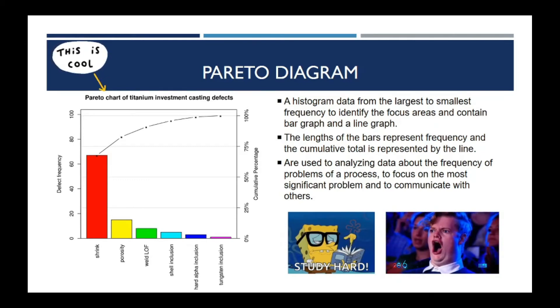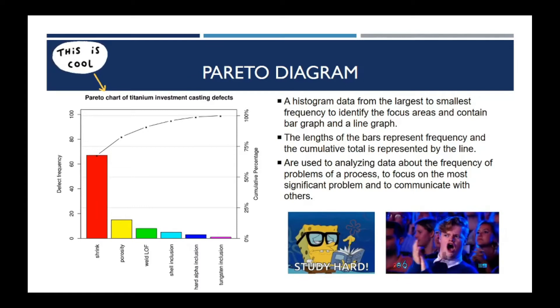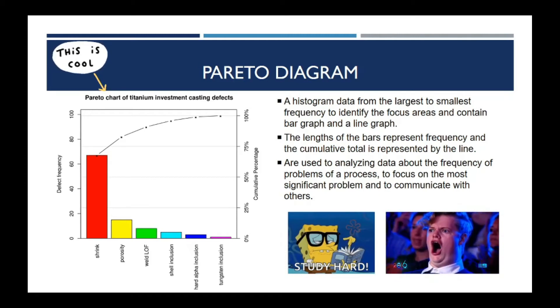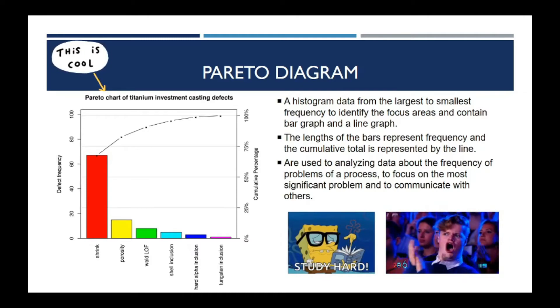Pareto Diagram is a histogram data from the largest to the smallest frequency to identify the focus areas and contains a bar graph and a line graph. The length of the bars represent frequency, and the cumulative total is represented by the line graph. Pareto Diagrams are used to analyze data about the frequency of problems in a process, to focus on the most significant problem, and to communicate with others.